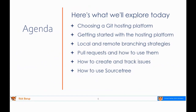This is what we're going to explore today. If you're going to use Git in a team environment, you need a place to put it, so I'm going to talk about hosting platforms in a general sense and how to get started. The next four topics I'll blend together in examples: how and when to create local branches, how many branches we can use, using pull requests to share code between developers, a brief sidebar on issue tracking tools, and throughout all of it, I'll be using SourceTree, which is a Git GUI from Atlassian.